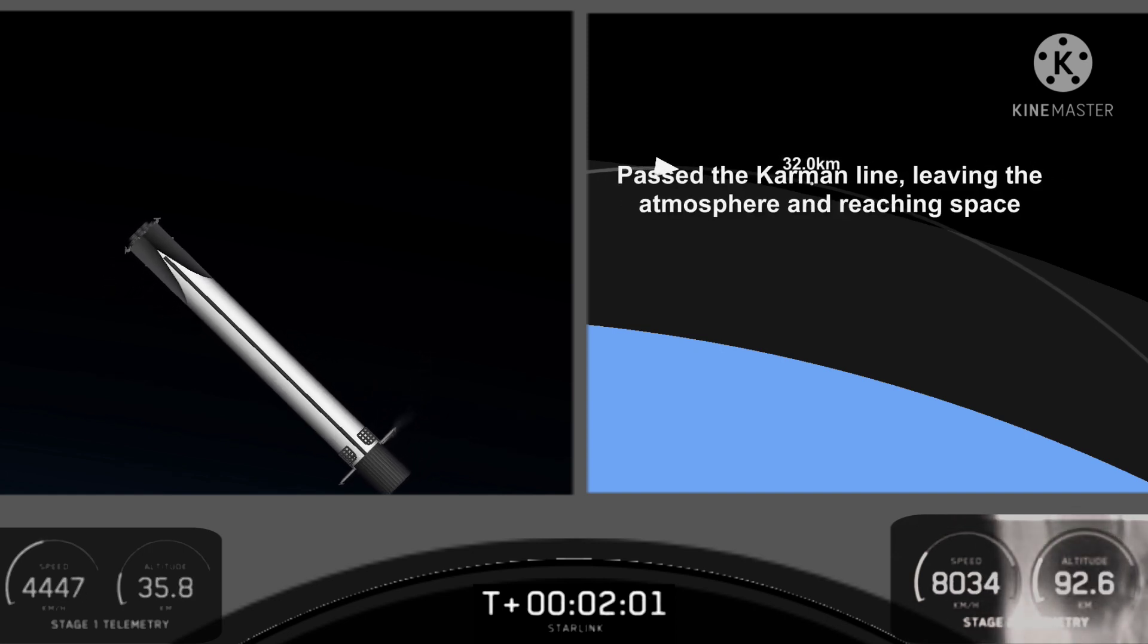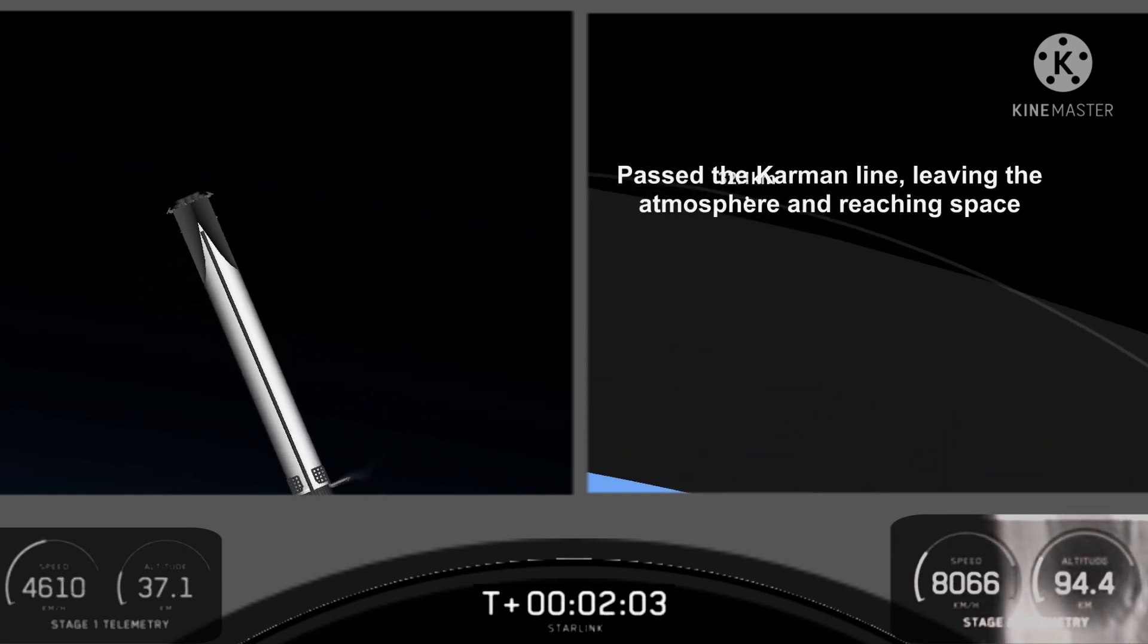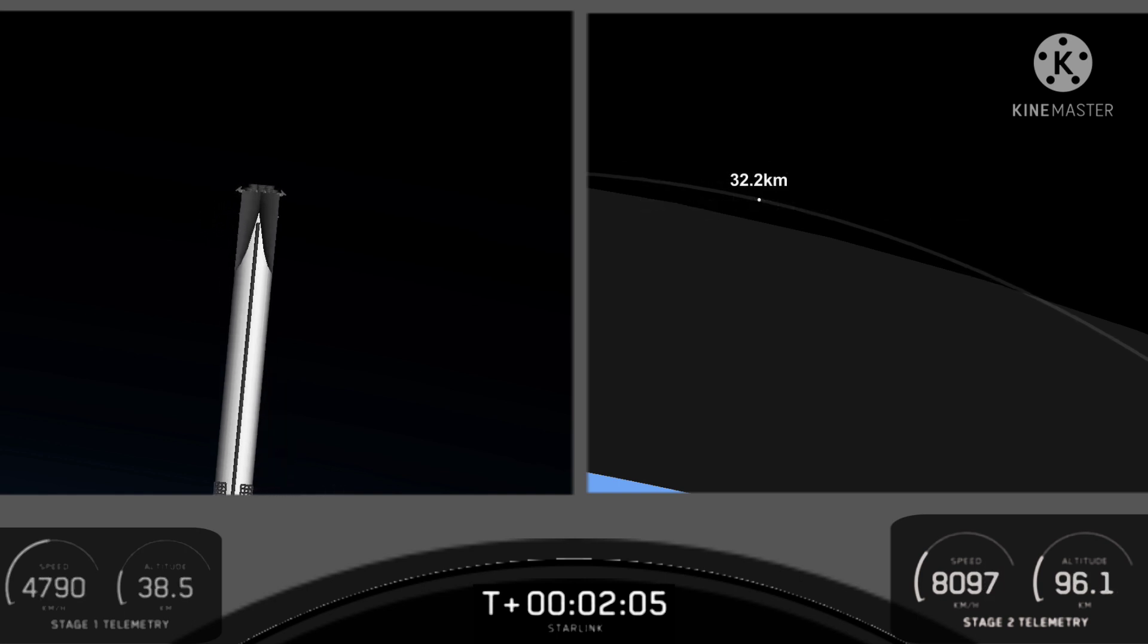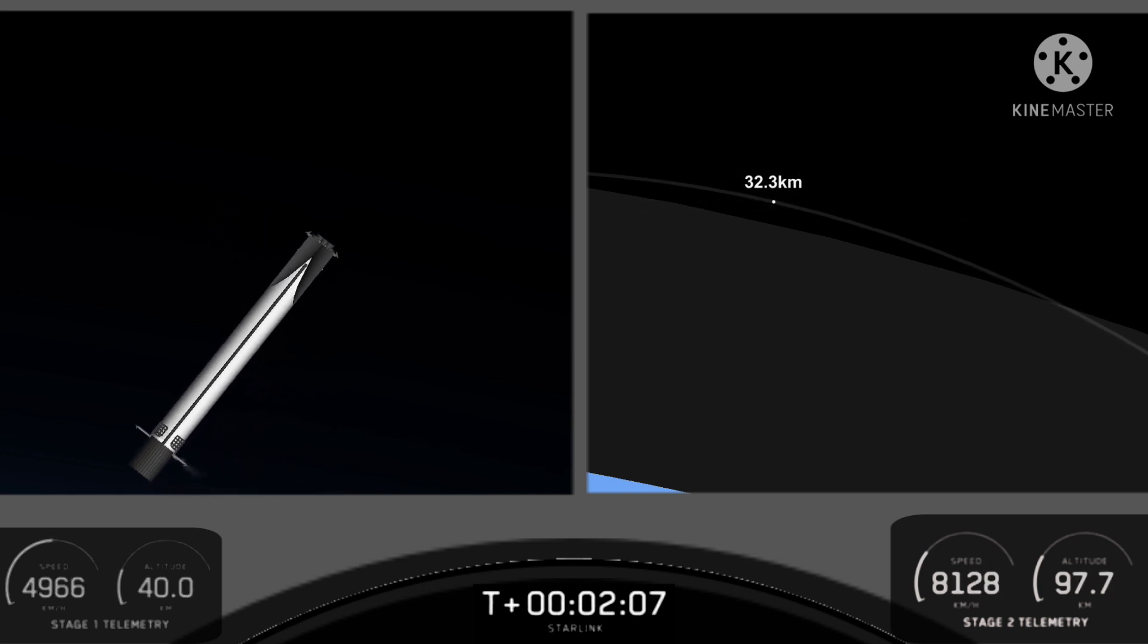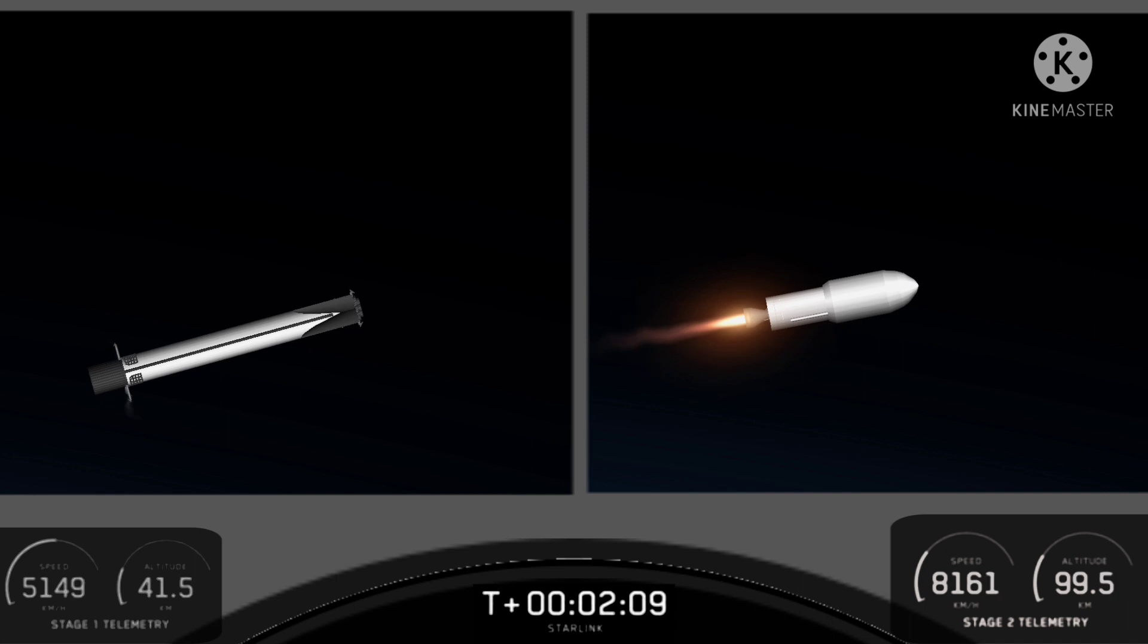The second stage will continue its journey with the third event, second engine start one. This is where the single Merlin vacuum engine on the second stage will ignite and propel the second stage along with the Starlink satellites into orbit.